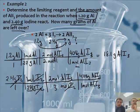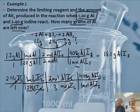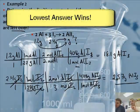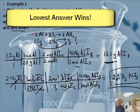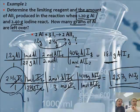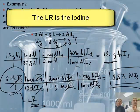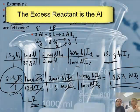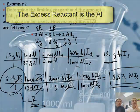We're going fast — you might need to pause the video. The result is 2.57 grams of AlI₃. Since 2.57 is smaller than 18.1, the iodine (I₂) is the limiting reactant, and that is the amount of product we will produce. The limiting reactant is the 2.4 grams of I₂, and the excess reactant is the aluminum.